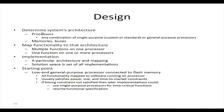We have seen the tasks and done the specification. Now we try to do the design. We will first determine the system's architecture — any combination of single-purpose or general-purpose processors — map the functionality to the architecture, and then do the implementation. At the starting point, let us start with a low-end general-purpose processor, since we want to minimize cost.